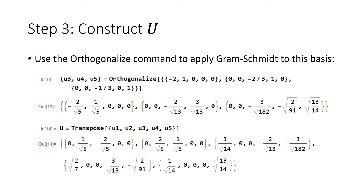We type in our three parametric vectors and apply the orthogonalize command. The resulting vectors U3, U4, U5 are orthogonal to U1 and U2 by construction, orthogonal to each other, and all unit vectors. So matrix U, whose columns are U1 through U5, forms a full orthonormal basis for R5.